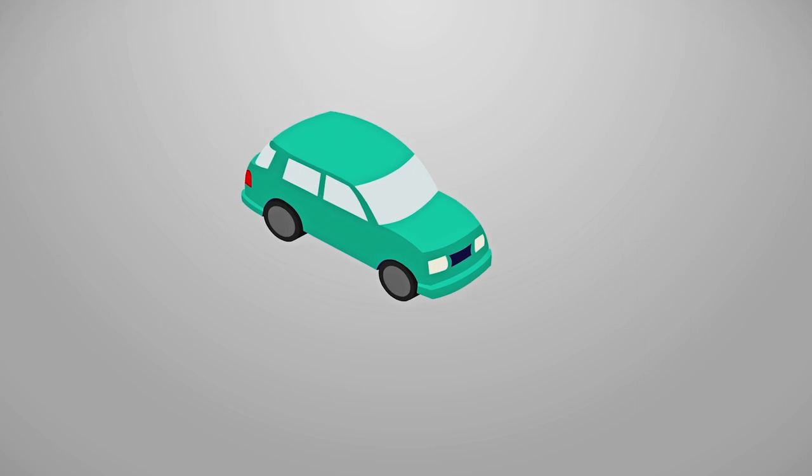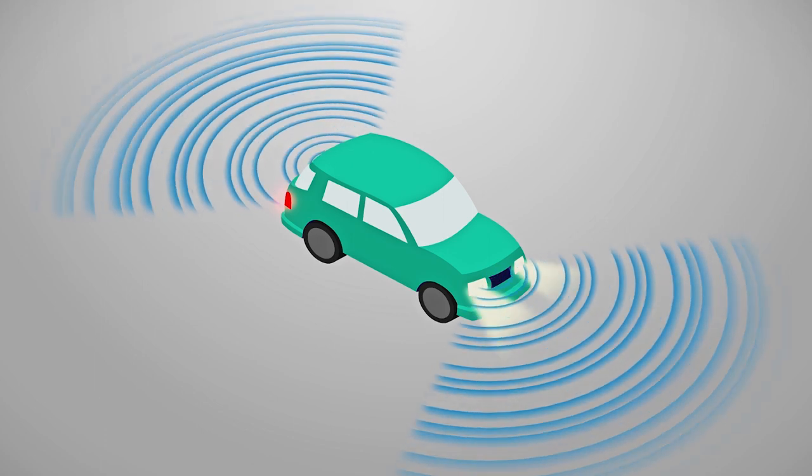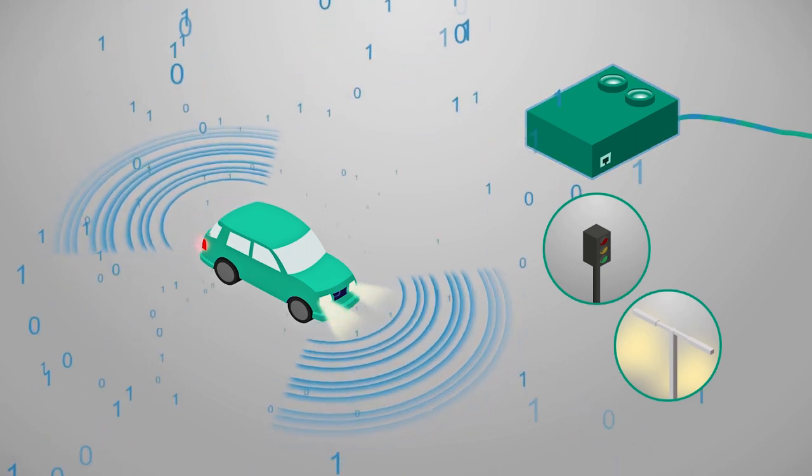With the help of a modulator developed by Fraunhofer Heinrich Hertz Institute, LED lamps are switched on and off very quickly and data is sent to the receiver as ones and zeros, invisible to the human eye.